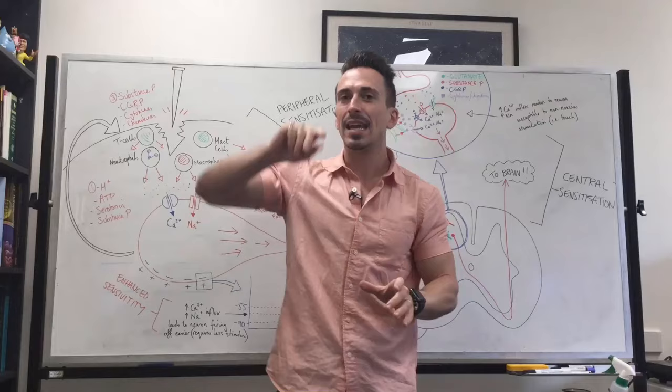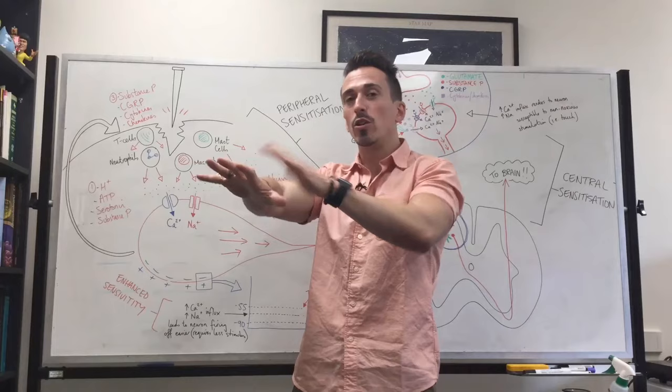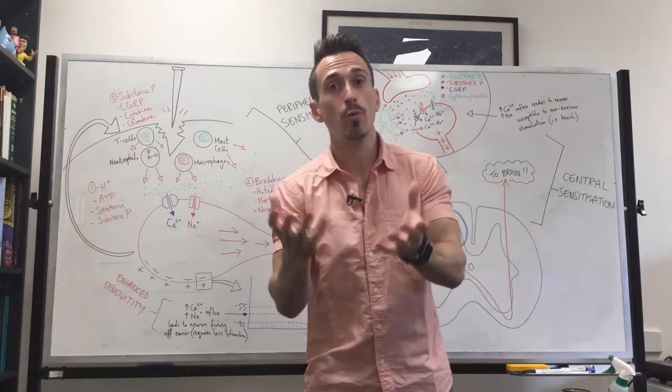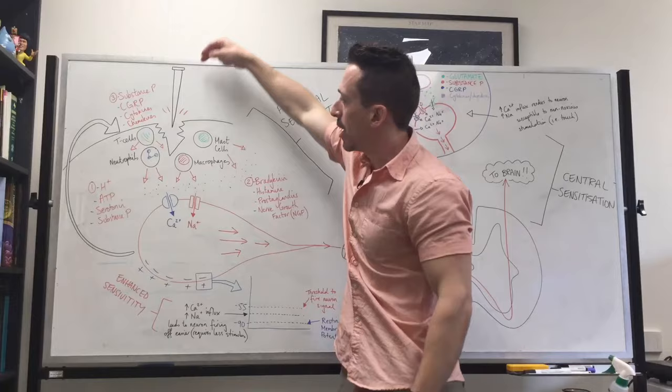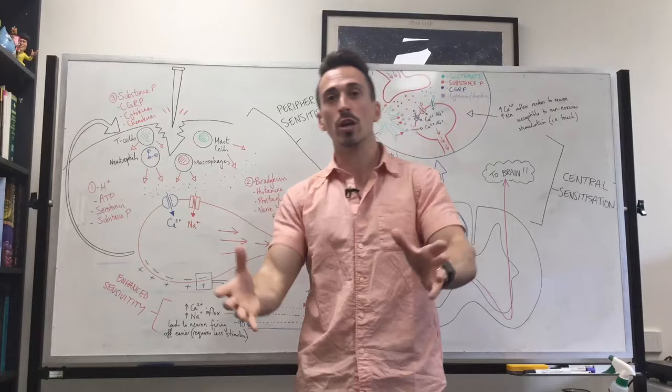With chronic pain, this process gets exacerbated. There are two types of sensitization: peripheral sensitization, which is usually at the site of damage, and central sensitization, which involves the brain and spinal cord. Let's look at these two types. Take a specific type of damage — let's say this is the skin of my hand and someone has broken the skin with a nail, damaging this vascularized tissue.